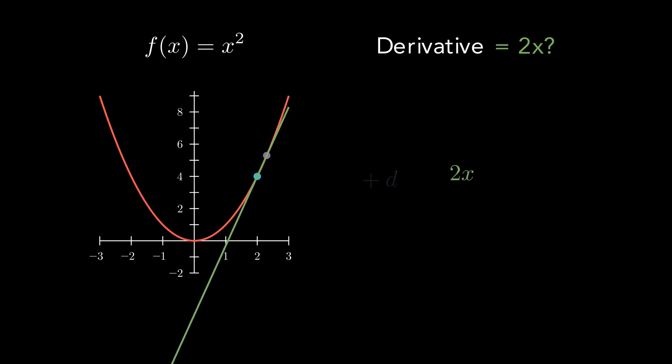As d gets smaller and smaller, the slope approaches 2x. So at any point x, the slope of the tangent line is equal to 2x. Thus, the derivative of x squared is equal to 2x.